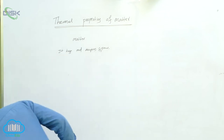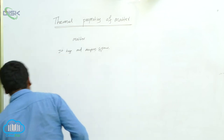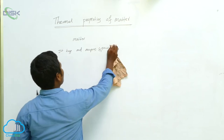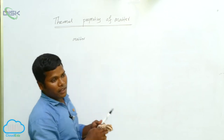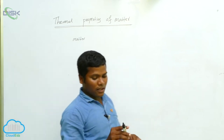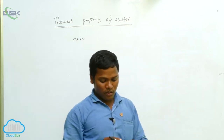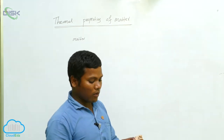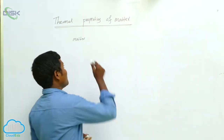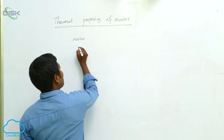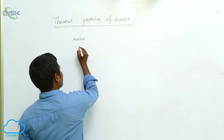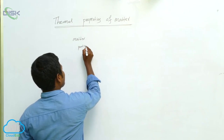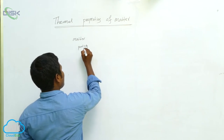Matter is made of particles. How can we make matter? The matter is made by particles. If I consider this chalk piece, this marker, or the blackboard — whatever you consider, that is made by particles.